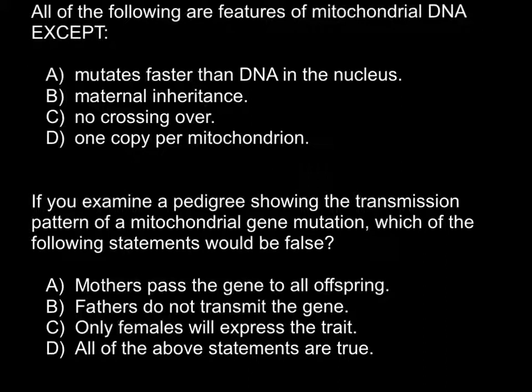The first question is: all of the following are features of mitochondrial DNA except. Answer A: mutates faster than DNA in the nucleus — this is a correct statement, because DNA in the mitochondria mutates faster because there is no mechanism of repair of mistakes, or at least it is not as effective as that in the nucleus.